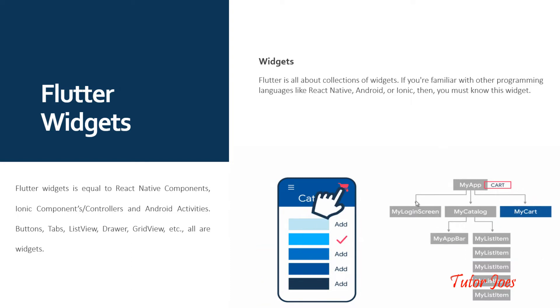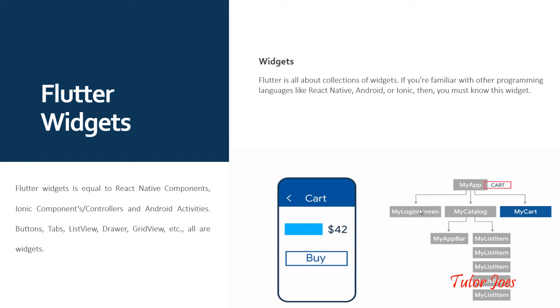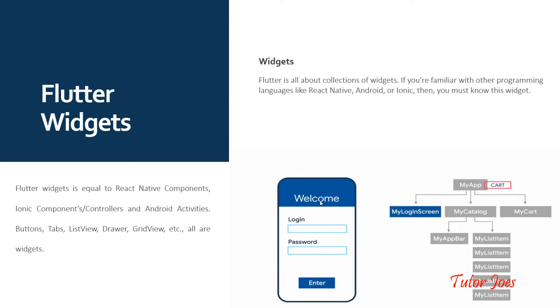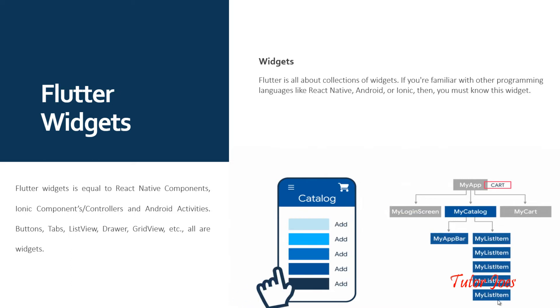There is a main app, a login screen, a category, an app bar, and a list item. We'll tell you all the widgets.